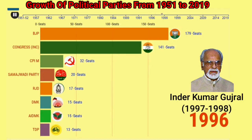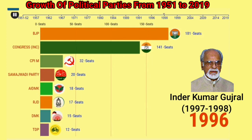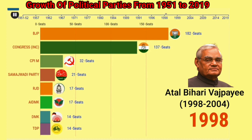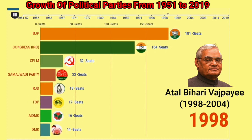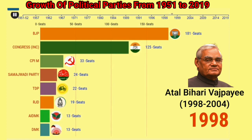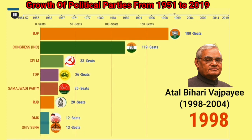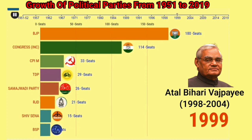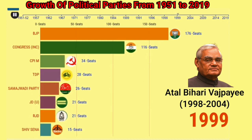After H.D. Deve Gowda, I.K. Gujral became the Prime Minister of India for only one year. Later on, Atal Bihari Vajpayee became the Prime Minister of India from the National Democratic Alliance, and he served up to 2004.